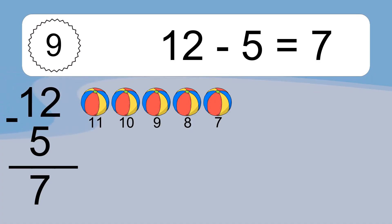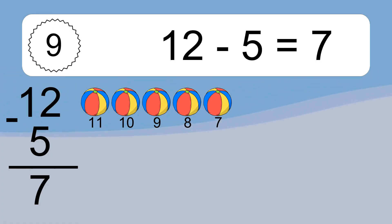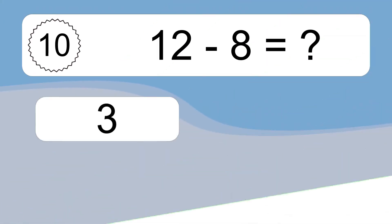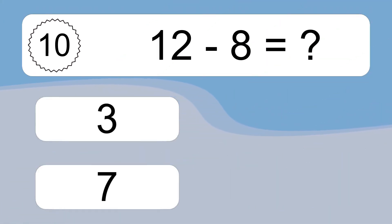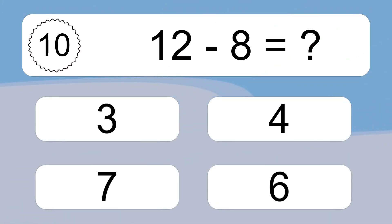12 minus 5 equals 7. Let's count it: 11, 10, 9, 8, 7.